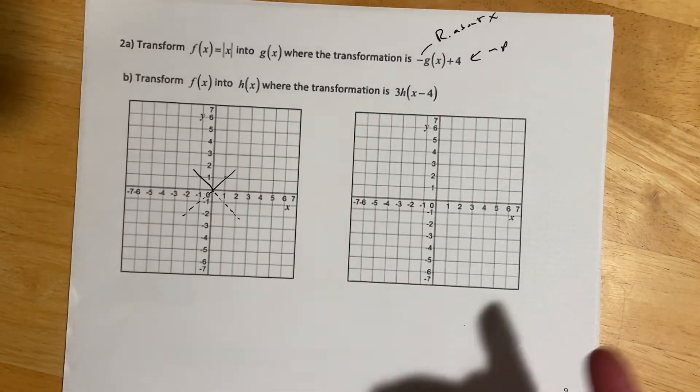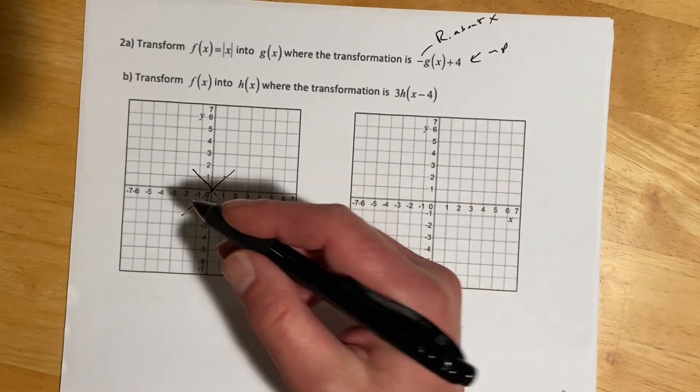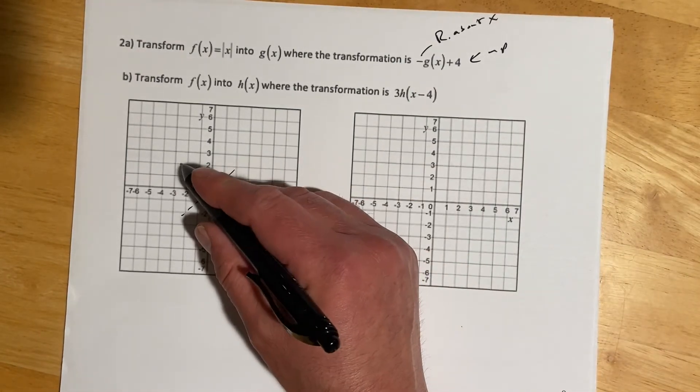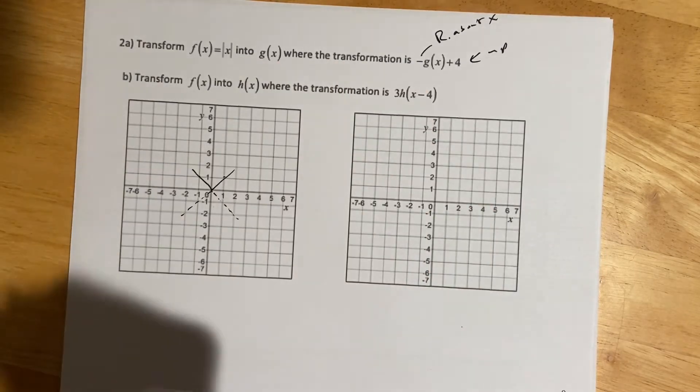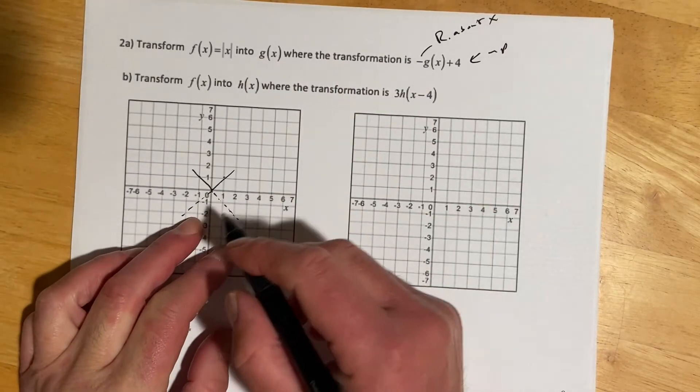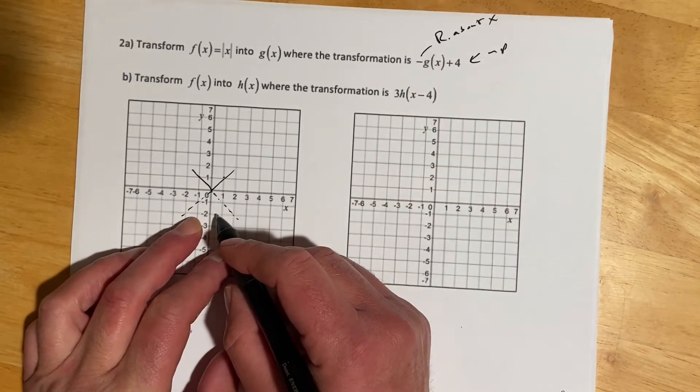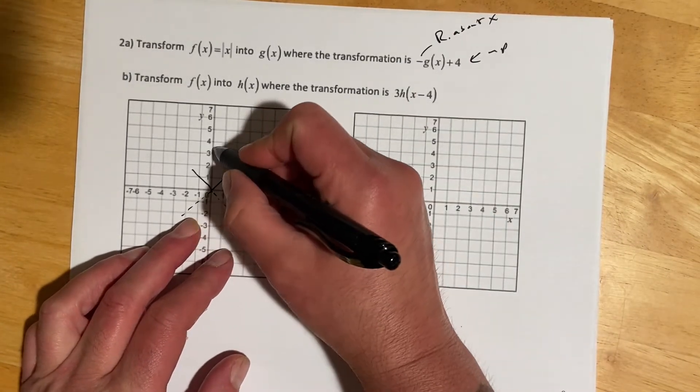We do any reflections first and then our up, down, left, right last, with stretches in between. Now we're going to move this up 4 and then that will be it.